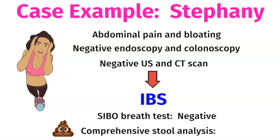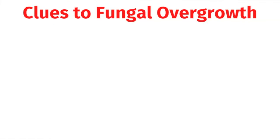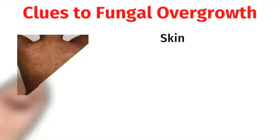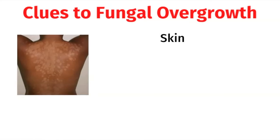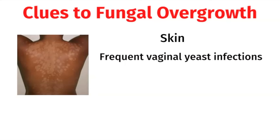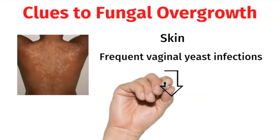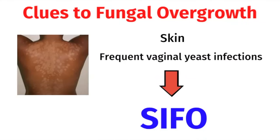Then we did a comprehensive stool analysis, which showed an overabundance of Candida albicans, meaning she had an overgrowth of yeast in her microbiome. There were other clues to fungal overgrowth as well. On her skin, she had tinea versicolor, a fungal infection causing lightened hypopigmented spots. She also mentioned frequent vaginal yeast infections. Putting all of these clues together, I diagnosed Stephanie with SIFO, and this was the true organic basis of her IBS symptoms and chronic bloating.